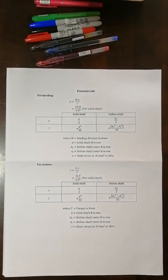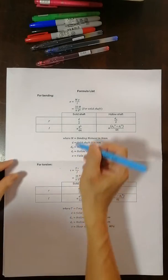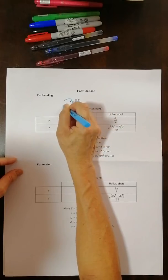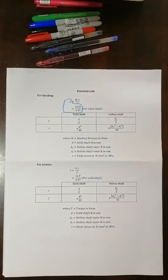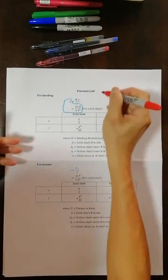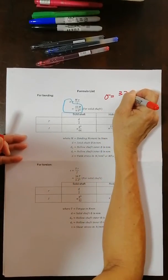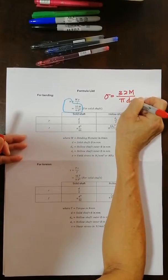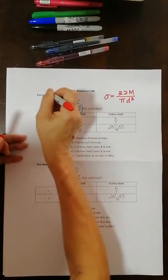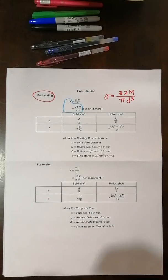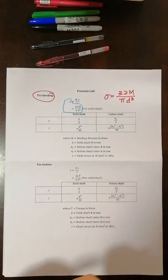So for the formula list, you realize that this is the formula I've been using so regularly. Stress equals—I used to write it this way—stress is equal to 32M over πD³, and this is for bending. And if that's for a solid shaft, if for example you were given a hollow shaft...